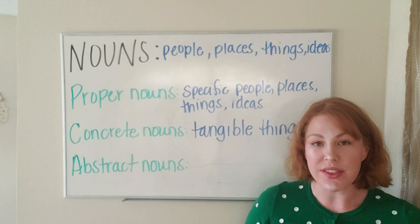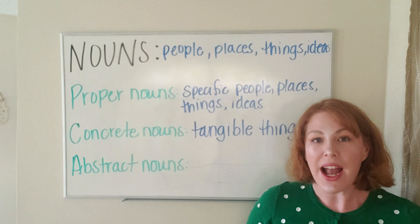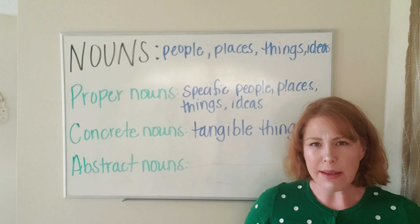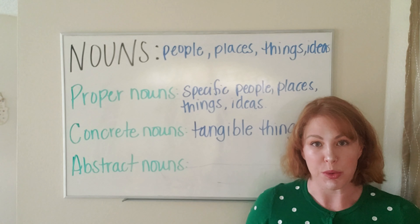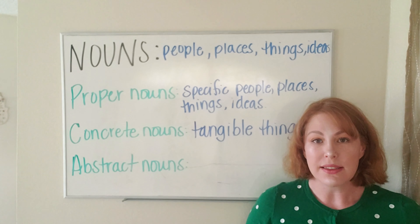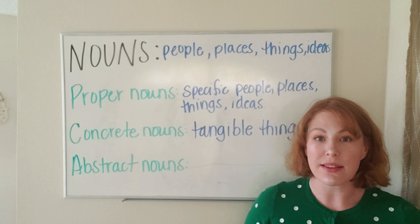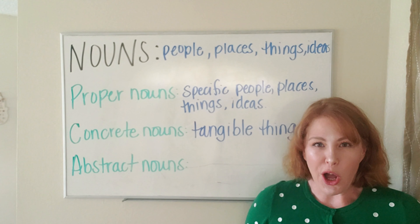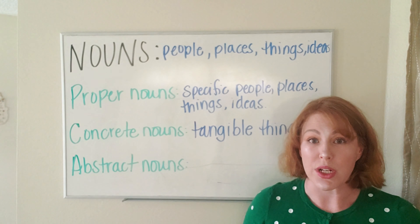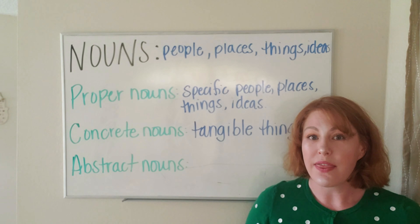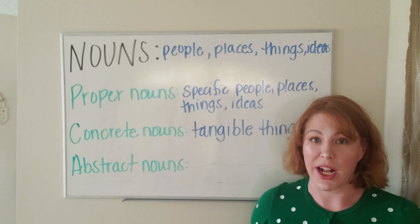The last type of noun you'll see in a basic sentence are abstract nouns. Abstract nouns are intangible things like friendship, liberty, and trust. All of those things you can't physically see or touch — that's what makes them abstract nouns.